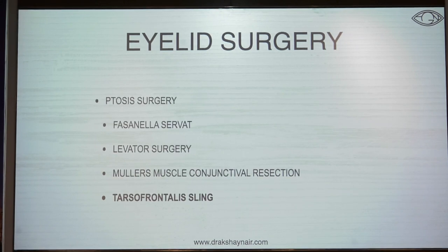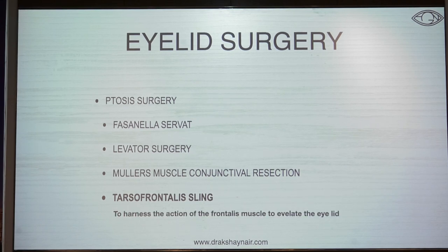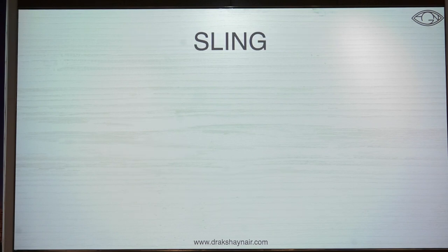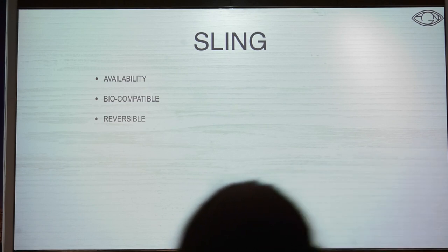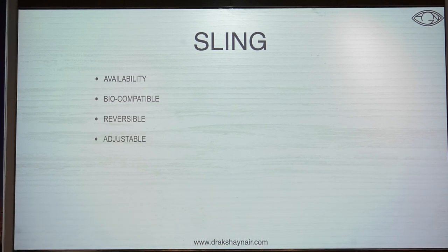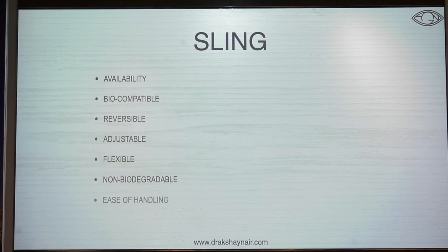In ptosis, we know there is fascia and levator-type surgeries, conjunctival Mueller's muscle resection, and the tarsofrontalis sling, which is where our implant comes in. A sling is performed to harness the action of the frontalis muscle to elevate the upper lid — hence the name tarsofrontalis sling. What categorizes a good sling material? It has to be available, biocompatible, reversible and adjustable, flexible, non-biodegradable (so the effect is not lost), easy to handle, and bio-integrable for long-lasting results.